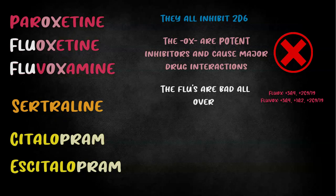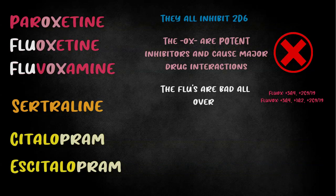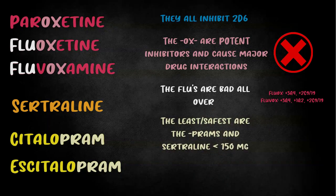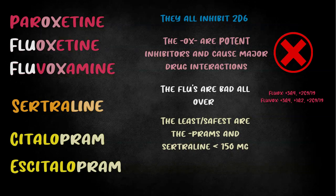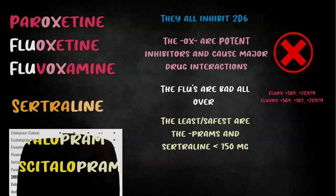Maybe it's silly, but 'flu' is three letters and these drugs also hit 3A4. Fluvoxamine also hits 1A2 and 2C19. The key thing to remember is the oxes cause major drug interactions and the flus hit a few of the CYPs. Fact four: the SSRIs with the least interactions are the prams and sertraline at less than 150 milligrams. Sertraline might be the safest bet below 150mg — it's almost like a cousin to the oxes, but it only becomes significant above 150 milligrams.